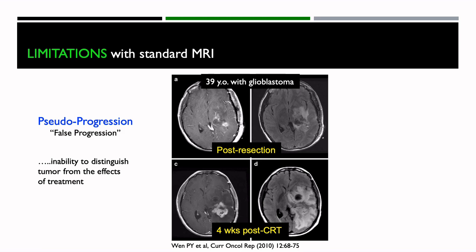An example: a 39-year-old with a glioblastoma, immediately after surgery. Four weeks later, after chemoradiation therapy, it looks like things are getting worse — the enhancement is increasing and the area of FLAIR signal showing edema is also increasing. There's great concern this could be tumor progression. However, when this person went back to surgery and the area of enhancement was removed, it was mostly necrosis. So this area was clearly not progressing tumor — it was due to treatment effect. This was a clear case of pseudoprogression.